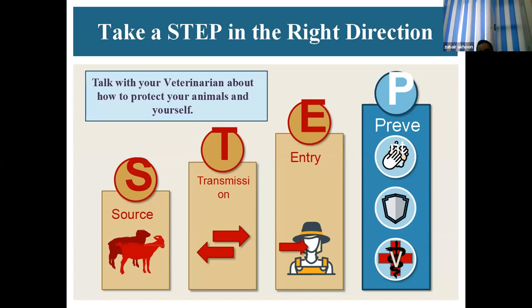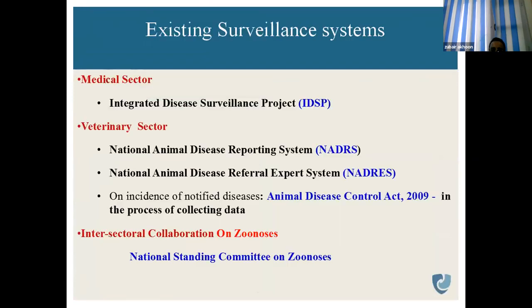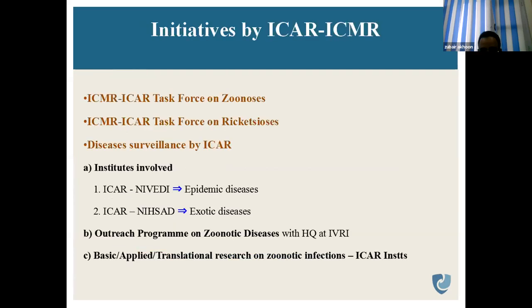We can stop zoonoses at three points — at the source, at the transmission level, and at entry. In India, the existing surveillance system includes in the medical sector the Integrated Disease Surveillance Project, and in the veterinary sector: the National Animal Disease Reporting System, National Animal Disease Referral Expert System, the Animal Disease Control Act 2009, intersectoral collaboration on zoonosis, and the National Standing Committee on Zoonosis. Joint initiatives include the ICAR and ICMR task force on zoonosis and joint collaboration task force on zoonotic sources.